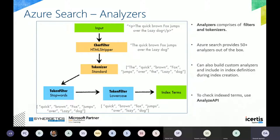You can also build your own custom analyzers and include them in your index definitions. Out of the box Microsoft provides 56 such analyzers. There is an API called the Analyze API — we'll check how your text gets analyzed.